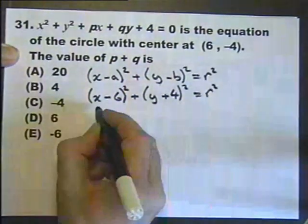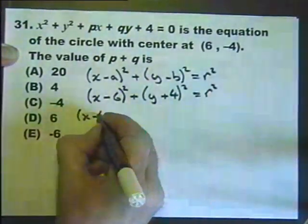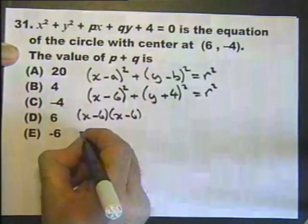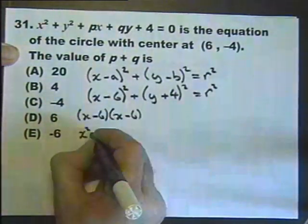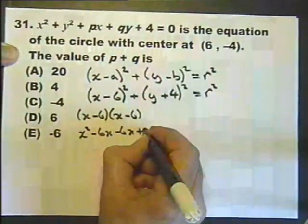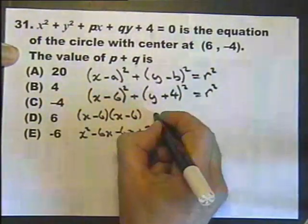Now let's remove the brackets. In other words x minus 6 multiplied by x minus 6. x times x is x squared, x times minus 6, x minus 6 times x minus 6 times minus 6. And now we have to do this bracket.